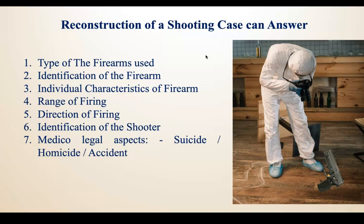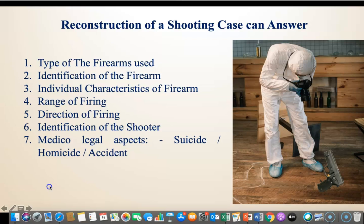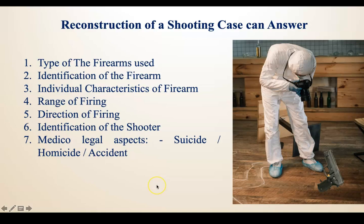Third is the individual characteristics of the firearm — characteristic features to correlate with other evidences such as firearm injury. Fourth is the range or distance of firing at the time of shooting. Fifth is the direction of firing. Sixth is identification of the shooter. Seventh is the medico-legal aspect — whether the case is suicide, self-infliction, homicide, or accident.